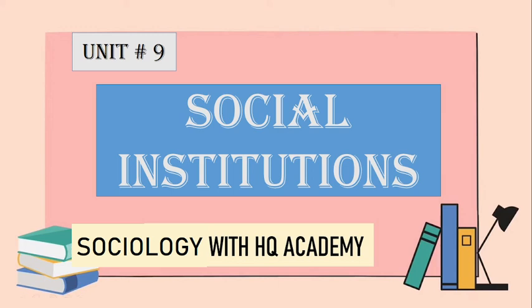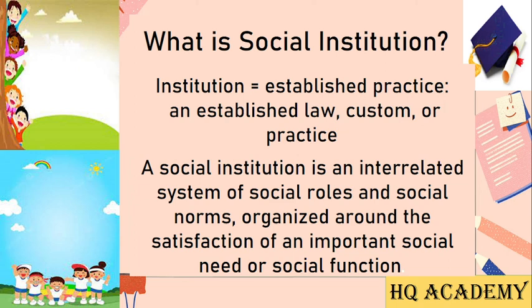Here we are at chapter number nine: social institutions. Social institutions establish practices, law, customs — the term is widely used to describe social practices that are regularly and continuously repeated, sanctioned and maintained by social norms, and have major significance on the social structure. Social institutions are an interrelated system of social roles and social norms organized around the satisfaction of important social needs or social functions.